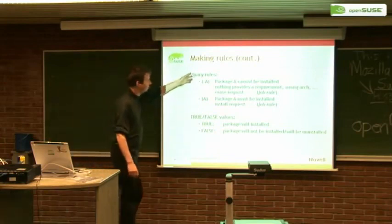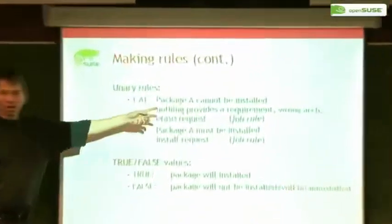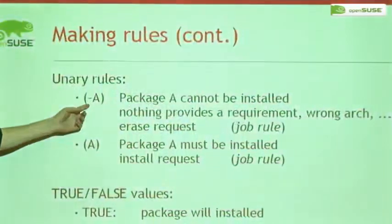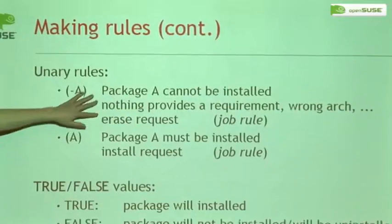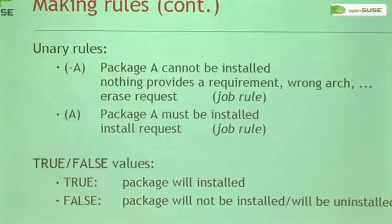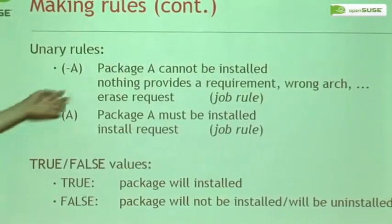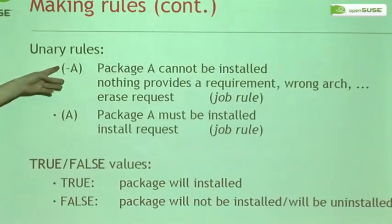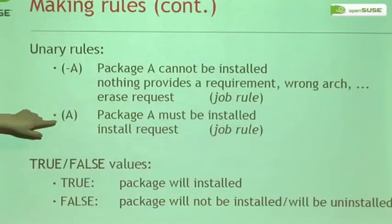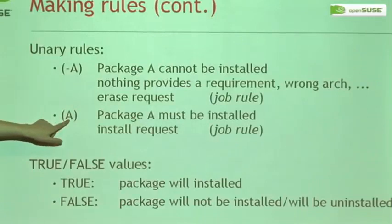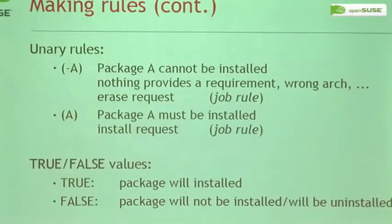There are also unary rules — special cases when nothing provides a requirement. You will have a unary rule 'not A', which tells the SAT solver that package A can't be installed. This can be because nothing provides it, or because it's a request from the outside — this is where the user interface comes in. When the user selects to erase a package, this rule gets added so the solver doesn't install it. For installation, when the user clicks to install a package, a unary rule with just that package gets added, telling the SAT algorithm this must be true — A must be installed.